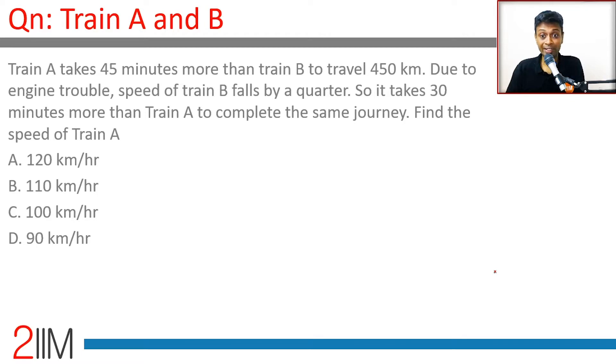Train A takes 45 minutes more than train B to travel 450 kilometers. Due to engine trouble, speed of train B falls by a quarter, so it takes 30 minutes more than train A to complete the journey.